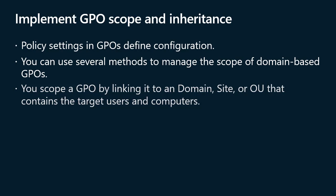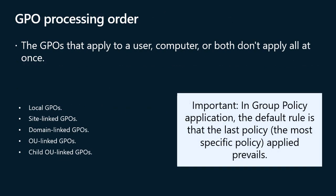The GPOs that apply to a user, computer, or both don't apply all at once — they apply in a particular order. Conflicting settings that process later might overwrite settings that process first. Group policy follows the following hierarchical processing order: first, local GPOs; second, site-linked GPOs; third, domain-linked GPOs; fourth, OU-linked GPOs; and finally, child OU-linked GPOs.